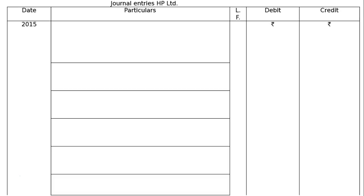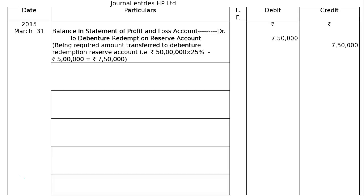Since the balance in the debenture redemption reserve is rupees 5 lakhs, we have to provide 25% of 50 lakhs, which is 12 lakh 50,000. Subtracting the existing 5 lakh balance, we have to provide another 7 lakh 50,000 to the debenture redemption reserve account. Hence the first entry is: balance in the statement of profit and loss account debited to debenture redemption reserve account.